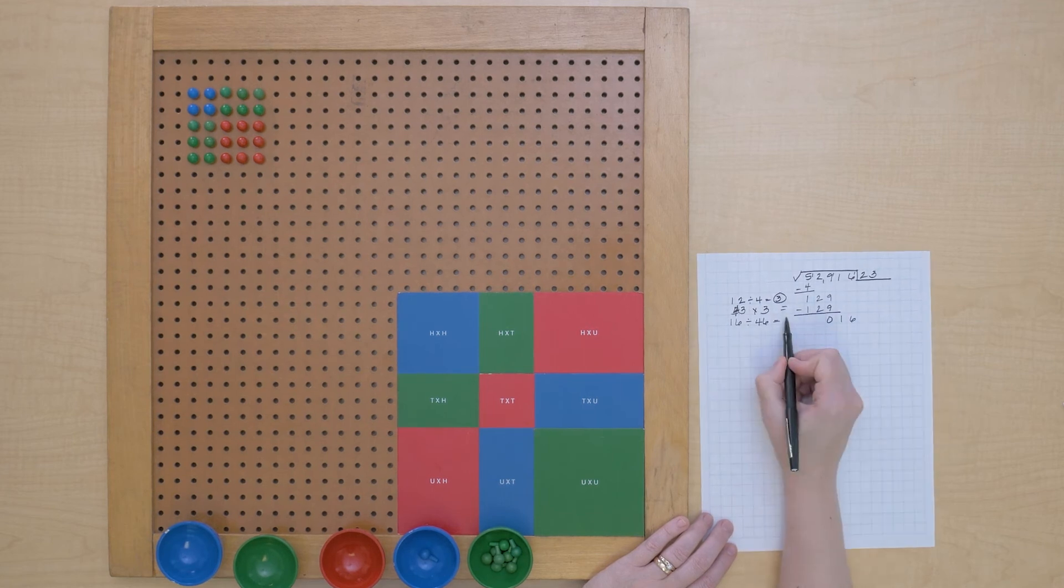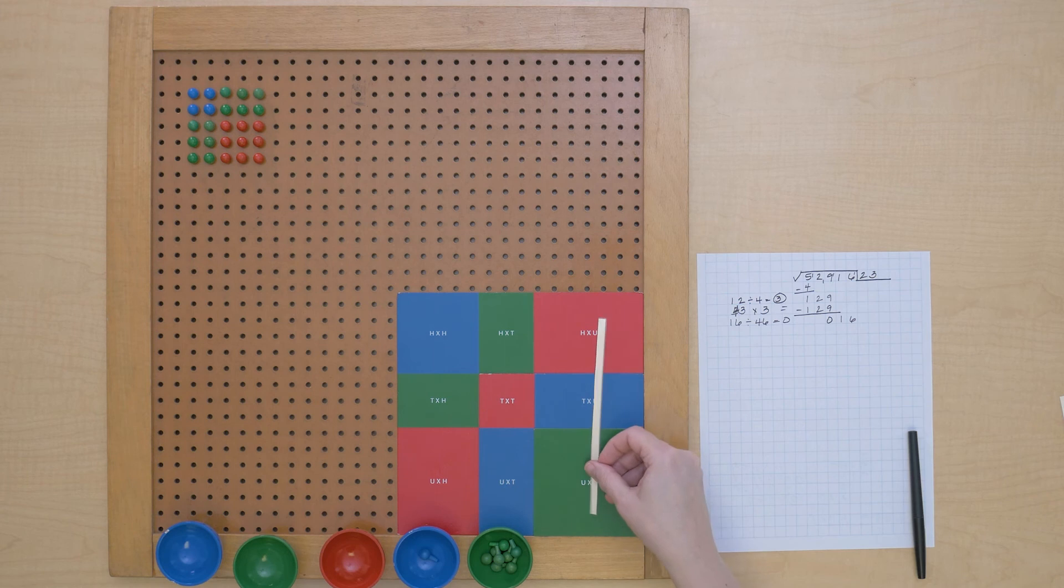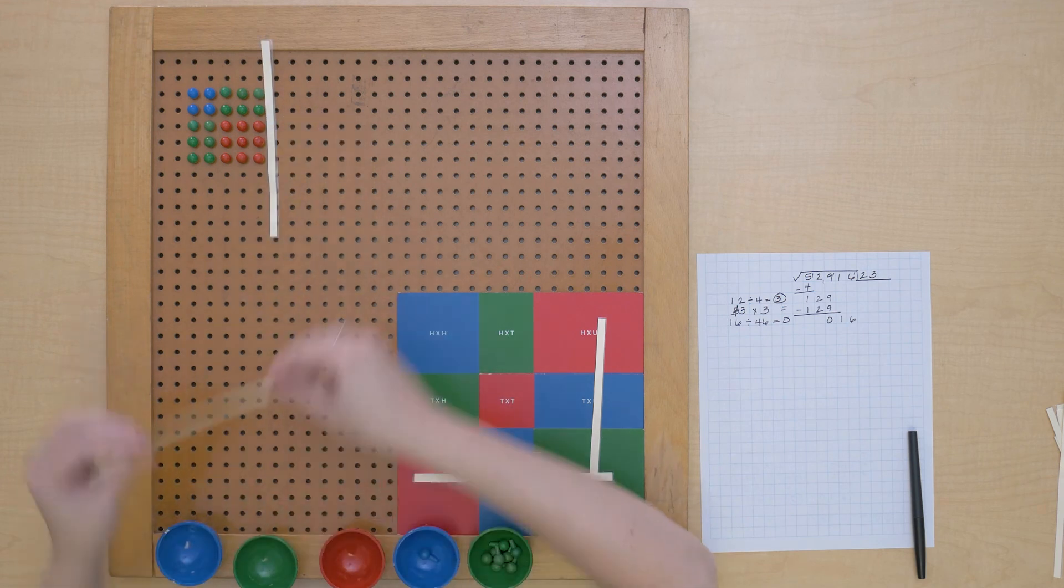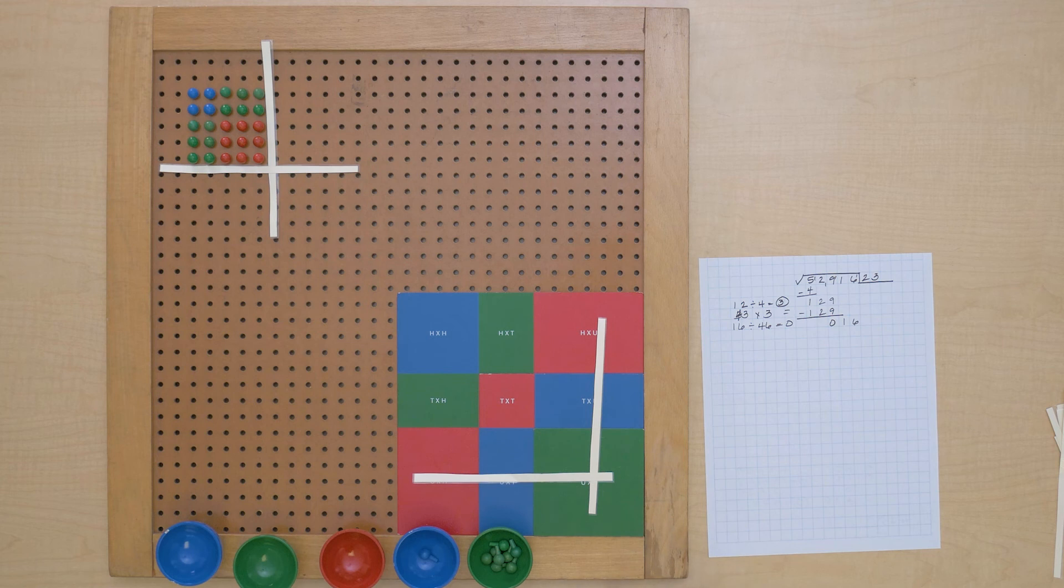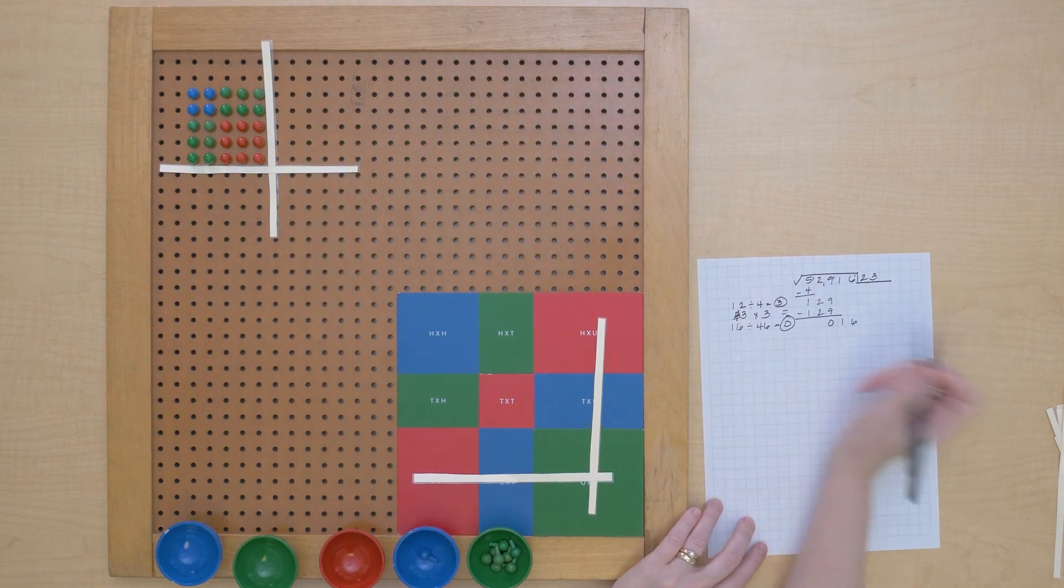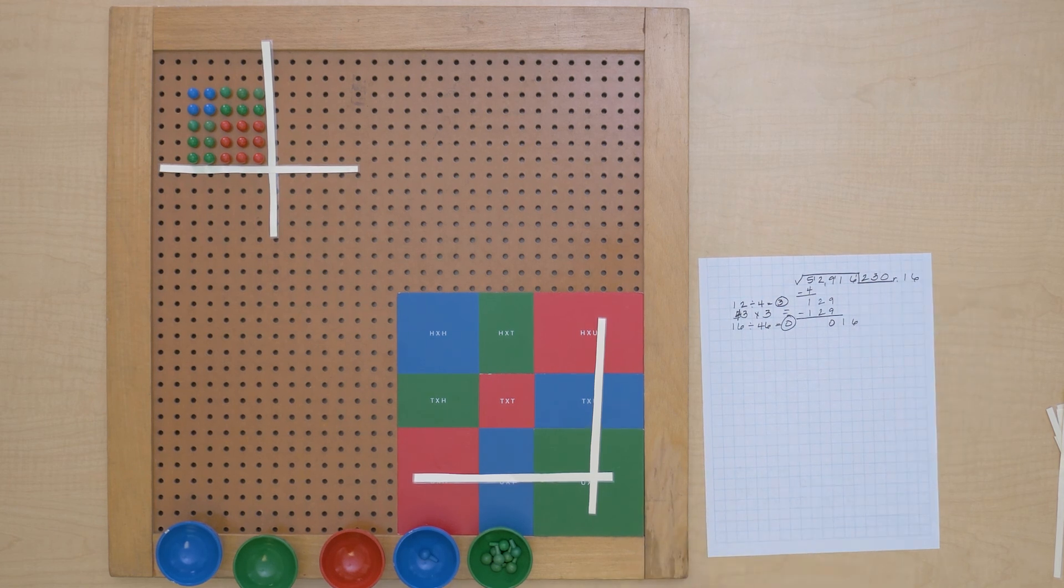So that means I don't think we're going to be able to do any of this. In fact, we can't build any of these. So our last digit is 0 with a remainder of 16. Now you know how to do all sorts of square root problems.